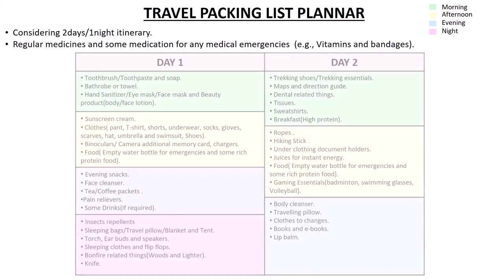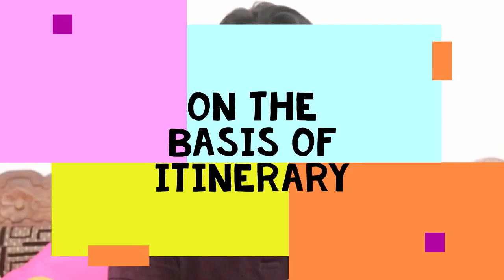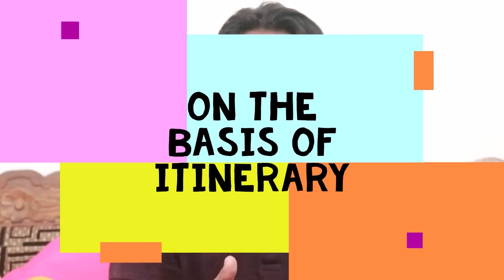We divide the checklist into morning, afternoon, evening, and night, so that in each phase of the day we know what things we are going to do according to what we have already planned.